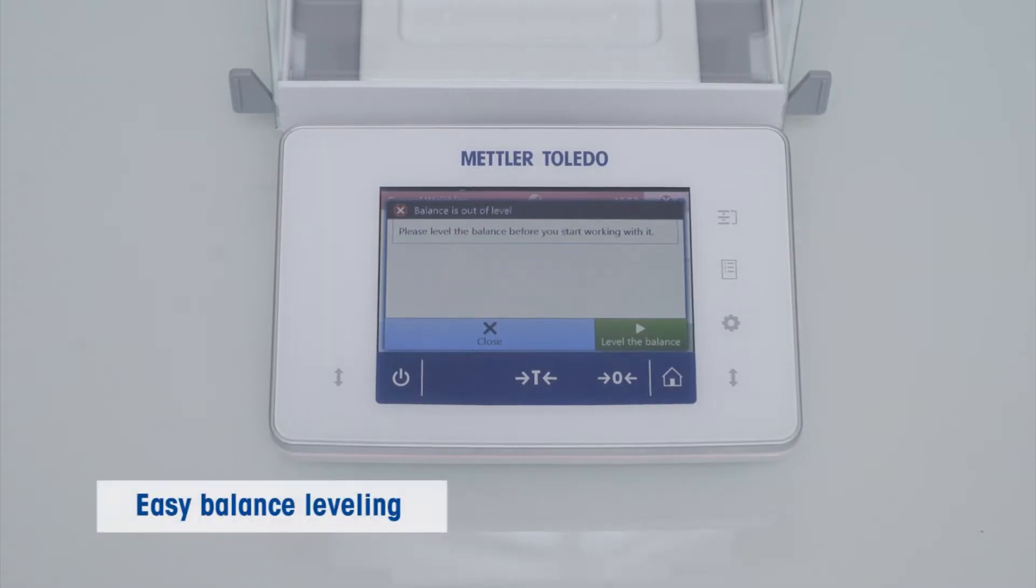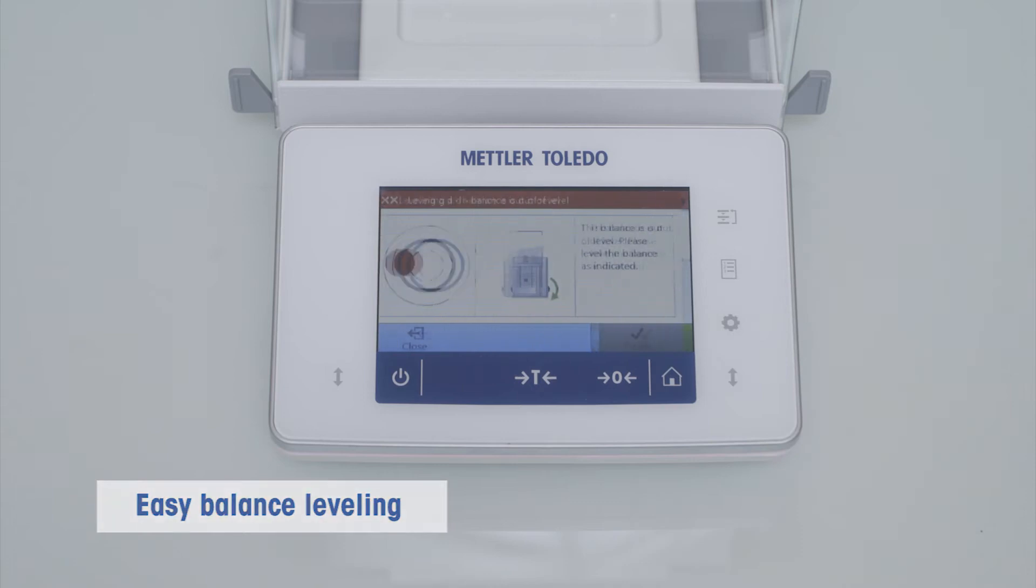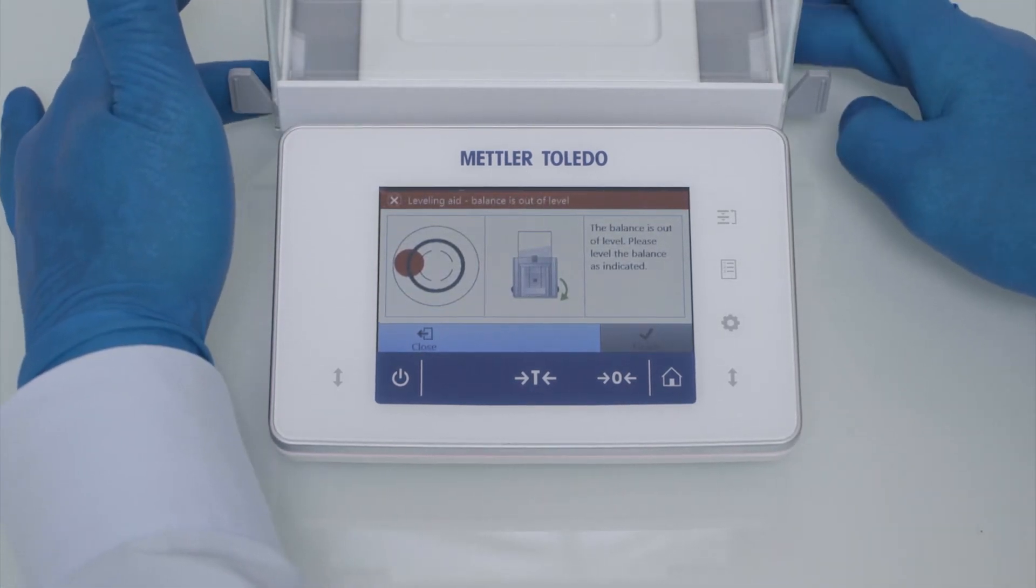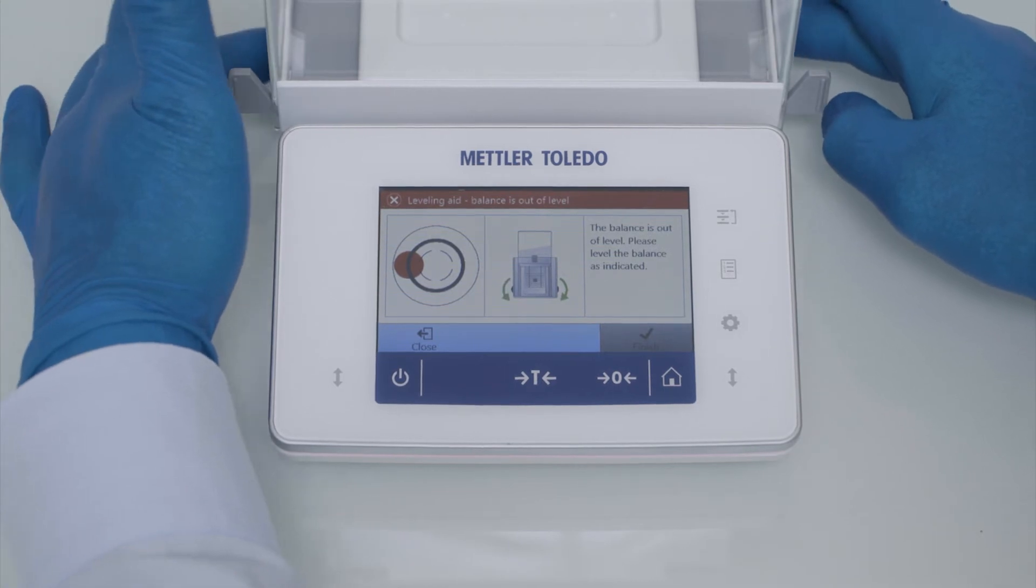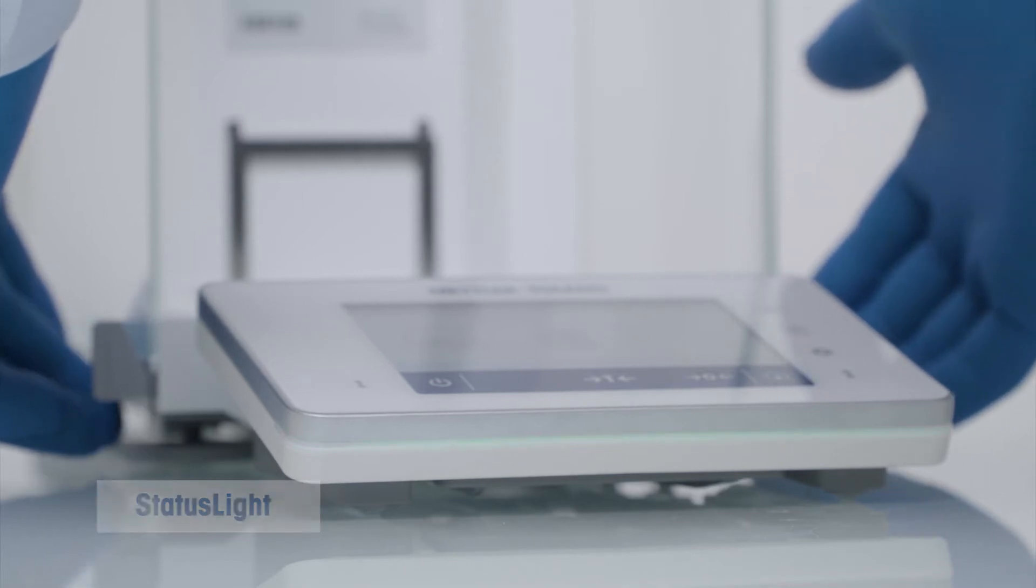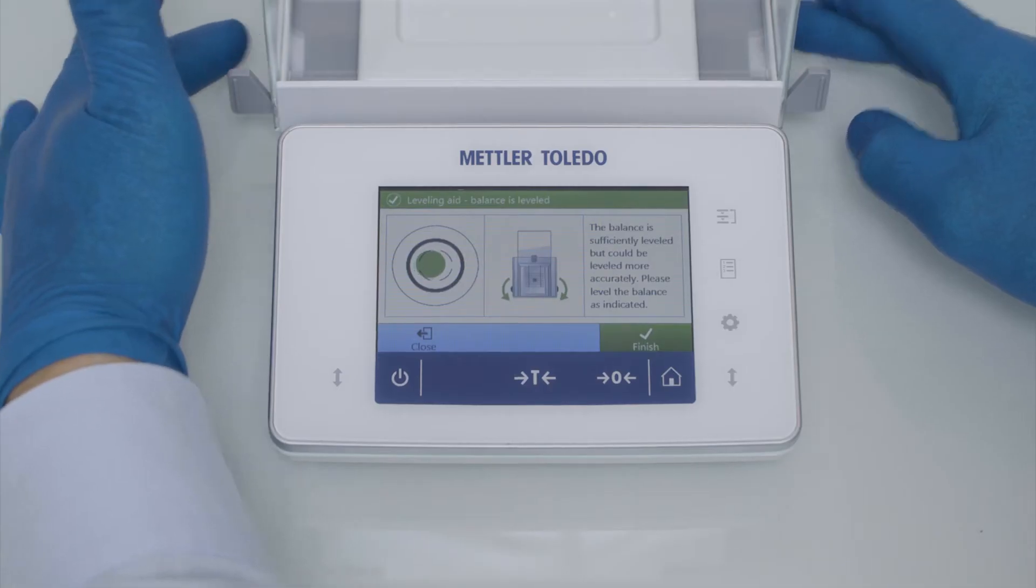First thing before you start weighing is to make sure the balance is leveled. The level bubble on the terminal display indicates the level status in green or red. The two level feet are conveniently accessible from the front of the balance. The status light indicates that the balance is ready to be used, for instance if it's leveled.